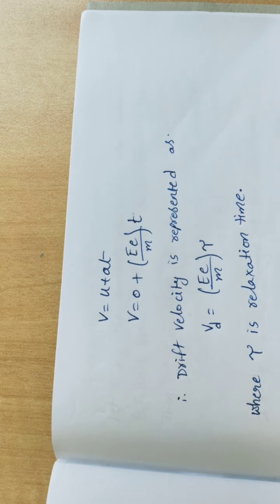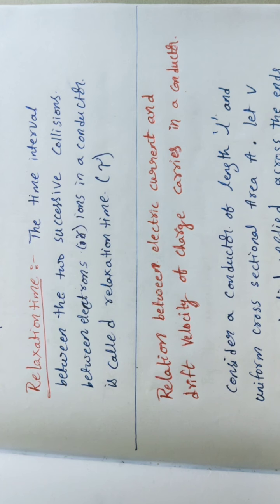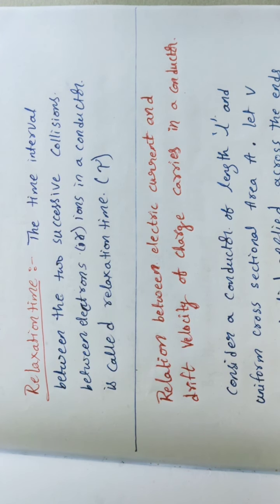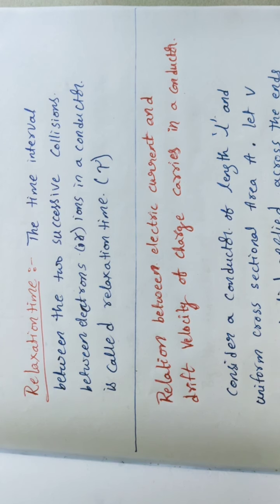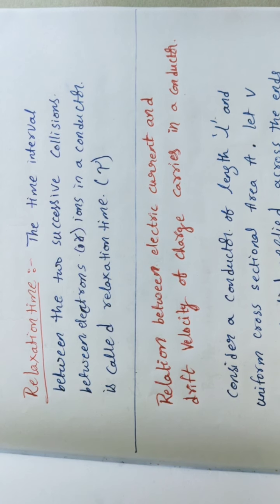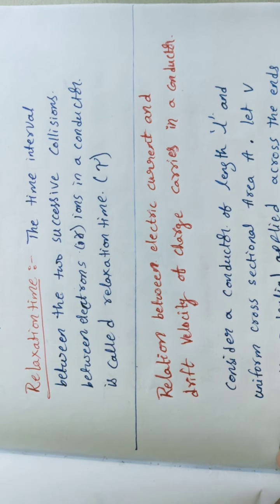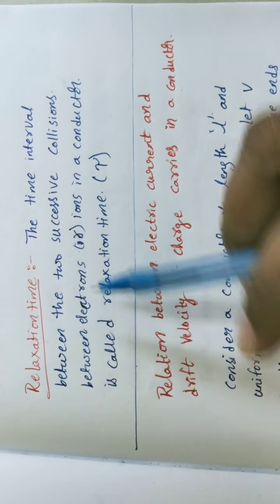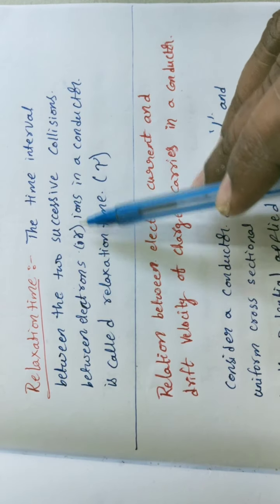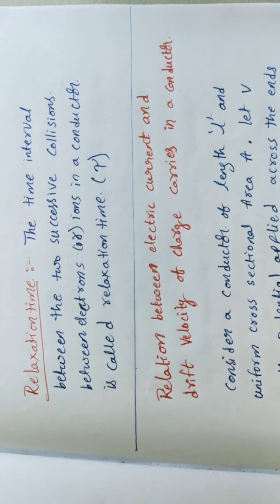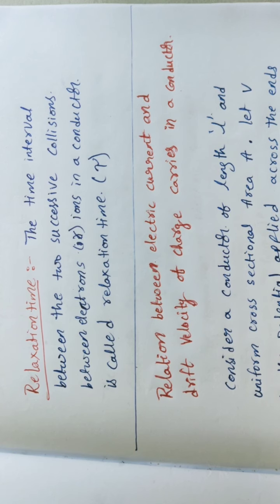Before discussing relaxation time, note that when a field is applied to a conductor, the drifting electrons collide with ions present in the conductor. Relaxation time is defined as the average time interval between two successive collisions between electrons or ions in a conductor, and it is represented with τ.